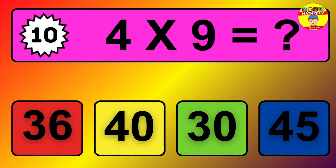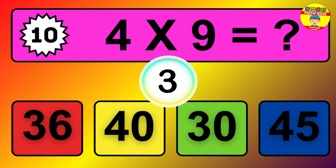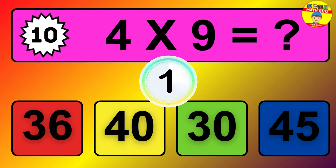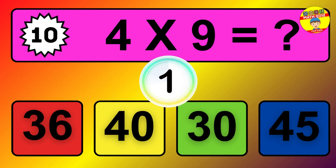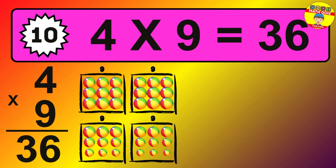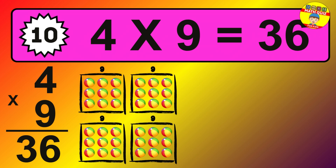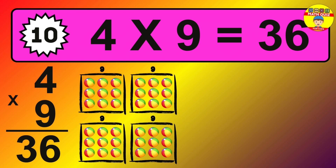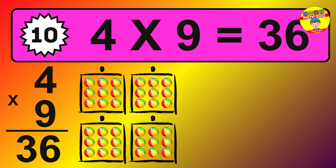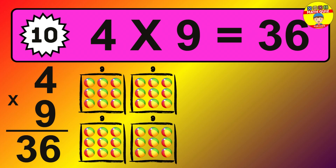Question 10. 4 times 9 equals what? The answer is 4 times 9 is 36. To calculate, we have 4 groups with 9 balls each one. So, how many balls do we have? 36 balls.